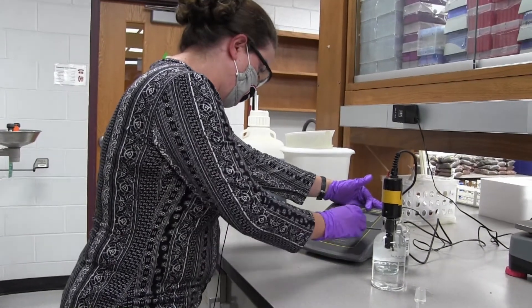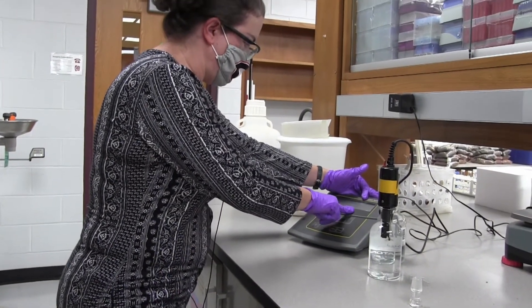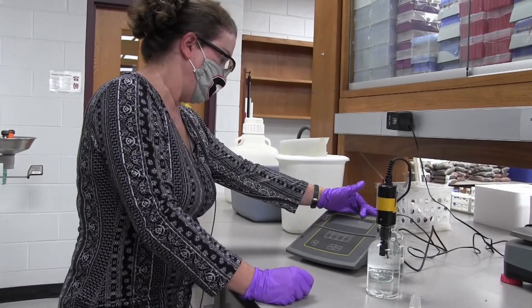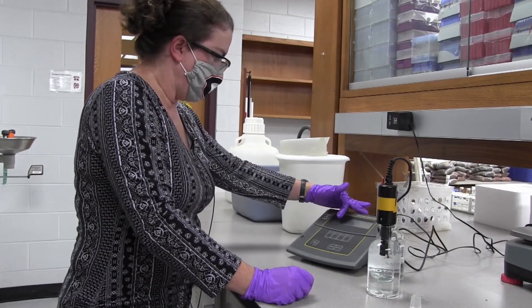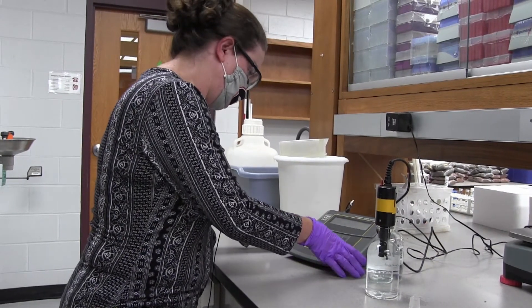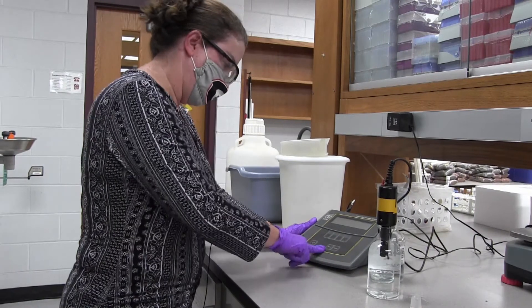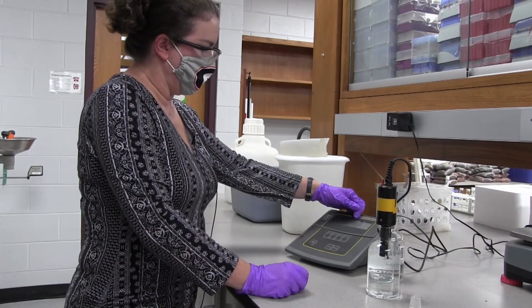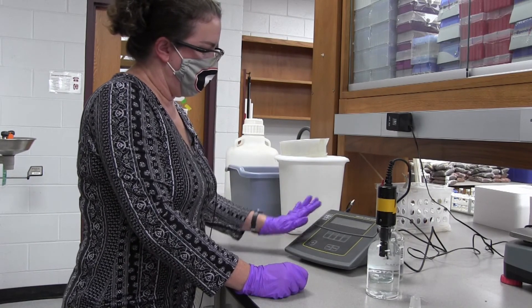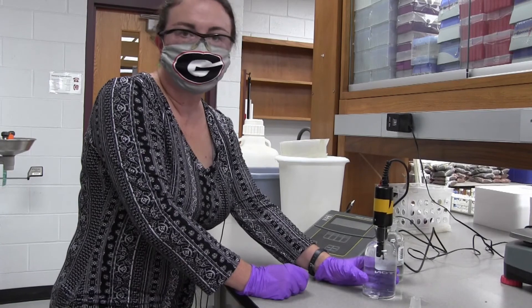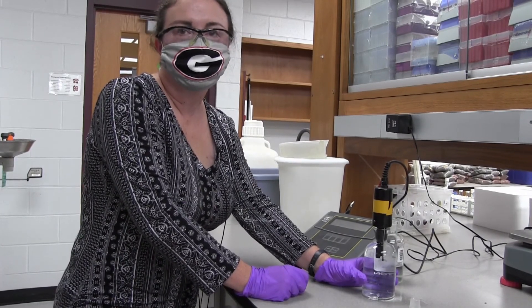Now it says press enter to save setting, so we're going to press the enter button. It says DO calibration saved. I'm going to press mode to get back to the main mode. Here's our 7.7. Now our meter is calibrated correctly to match the Winkler titration.